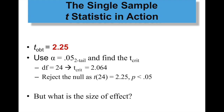Let's find t crit first. Get out your t table. Alpha is 0.05, two-tailed. Degrees of freedom is 24 because we had 25 people. So our t crit is 2.064. We reject the null. We reject the null hypothesis as our t obtained of 2.25 with 25 people in the study exceeded the critical value. We rejected the null hypothesis because our p was less than 0.05 alpha.